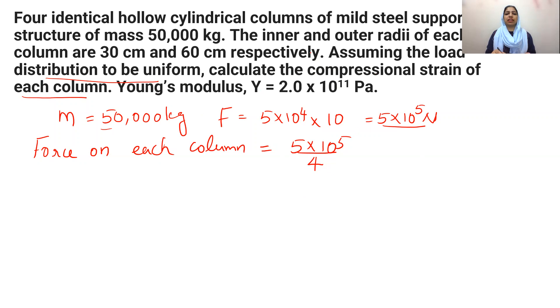So, the inner and outer radii of the columns are given as 30 cm and 60 cm. So, outer radii R₀ is 0.6 meter. Inner radii Rᵢ is 0.3 meter. Okay?